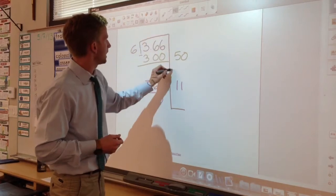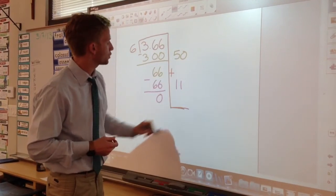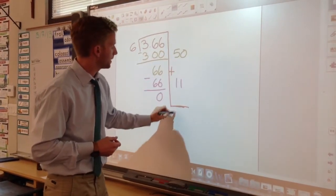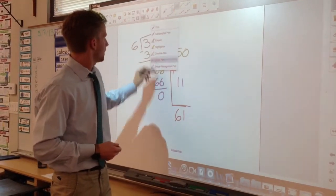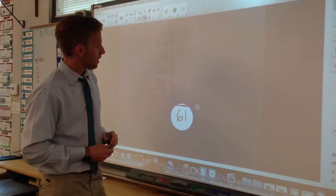Now I begin to add my partial quotients. 50 plus 11 is 61. I'm going to take this quotient of 61